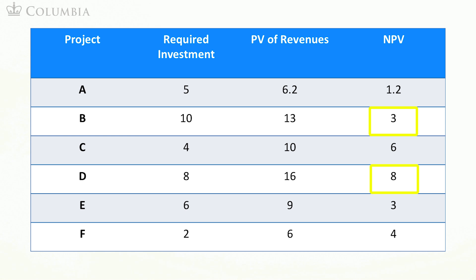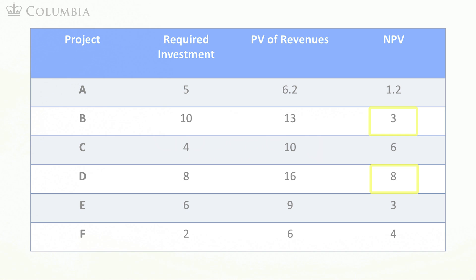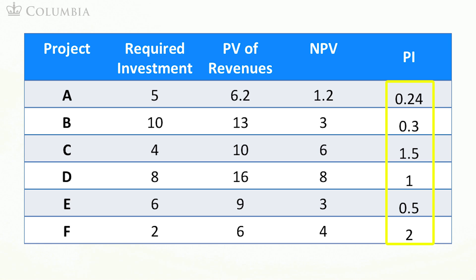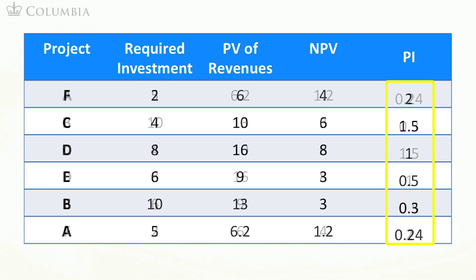However, this is tedious and can take a very long time. Alternatively, you can use the profitability index. To do this, first compute the profitability index of each of the projects. Then sort projects from the one with the highest profitability index to the one with the lowest profitability index.